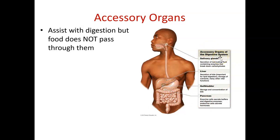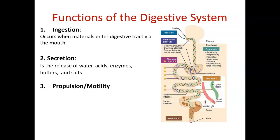You can live without your gallbladder, but you cannot live without a liver or a pancreas. As far as functions: ingestion — taking food in. We have an oral cavity, a mouth, and teeth so that we can take food in and start to break it all down.